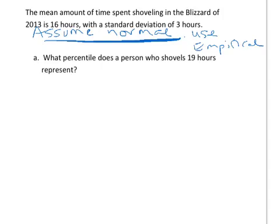Let's say we wanted to figure out what percentile a person who shovels 19 hours represents. The first thing we need to do is translate this into number of standard deviations. 19 doesn't mean anything to me — what means something is how many standard deviations that is from 16. So we find our z-score: (19 minus 16) over our standard deviation of 3, which comes out to be 1. That means we're one standard deviation from the mean.